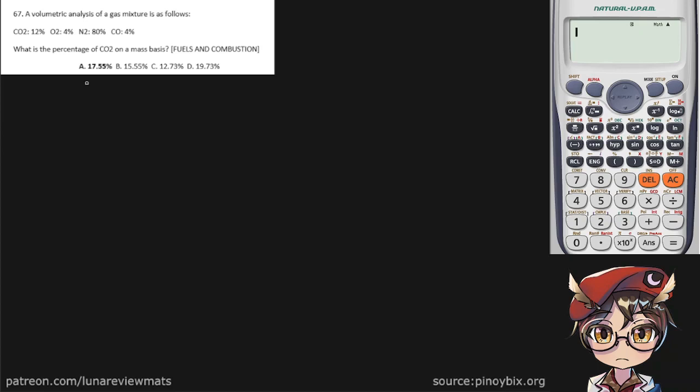A volumetric analysis of a gas is as follows. What is the percentage of CO2 on a mass basis? We are looking for the percent CO2 on a mass basis, and we know that has a formula of gravimetric analysis of CO2 divided by the gravimetric analysis of the entire gas.